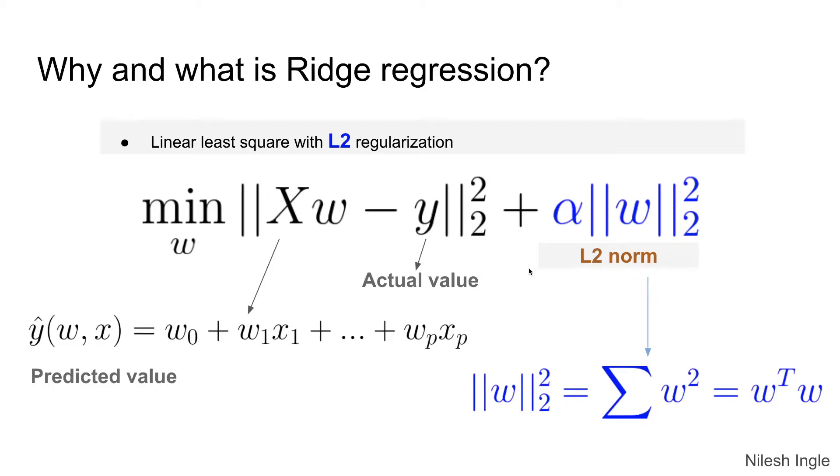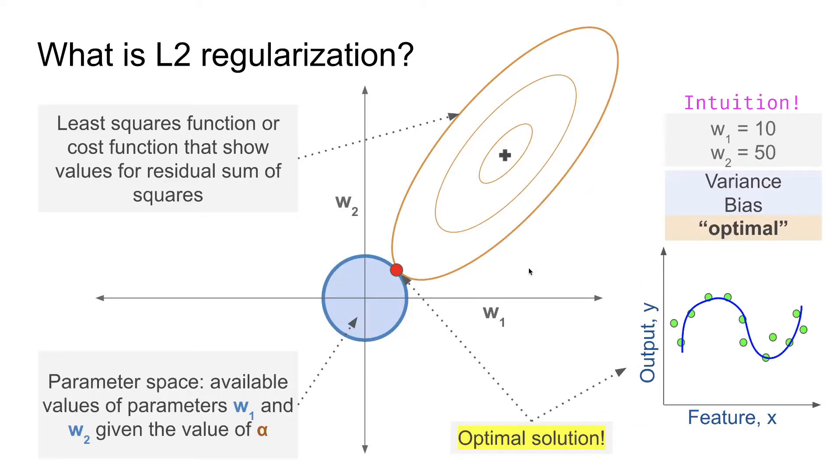That's how this Ridge regression works where if you look in this equation for Ridge, the norm is a circle, and so the points on the circle are the values for w1 or w2 that are used in the equation to minimize the residual sum of squares. In this particular plot, the orange circle shows the values for residual sum of squares and we need to find an optimal point.